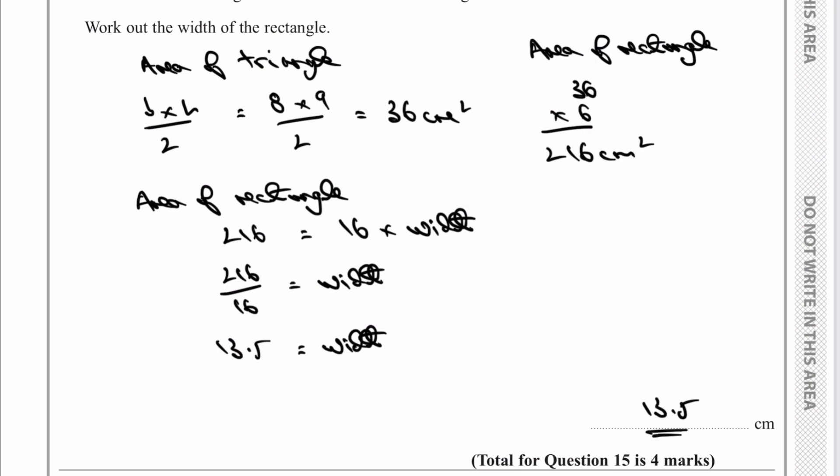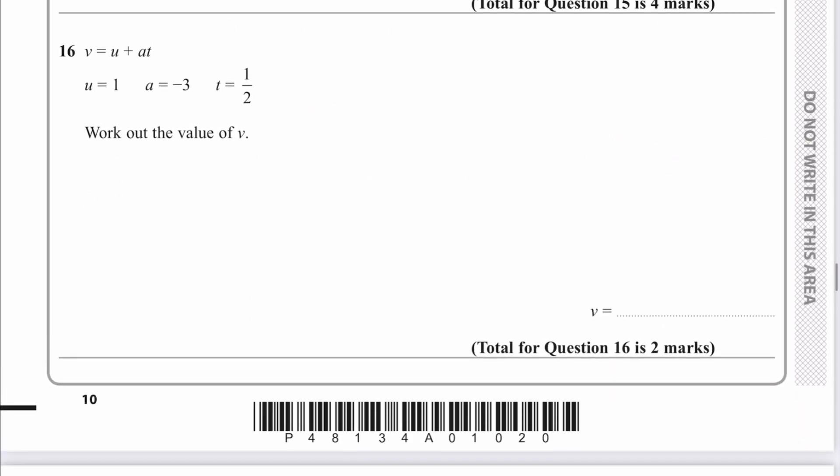Let's move on then to question number 16. A very typical substitution type question. The thing to be careful of is you've got a negative 3 in there. So I tend to use brackets when I'm working through this. So I'm going to write the 1, which is the value of u in brackets, plus and then minus 3 in brackets, multiplied by a half, which is the value of t. And that allows me then when I remove the brackets to recognize that I've got a half times minus 3, which is going to be negative 1.5. I'm doing these in decimals just because it's a little bit easier for the video. So that's going to give me a value of negative 0.5, which is the answer to this particular question.